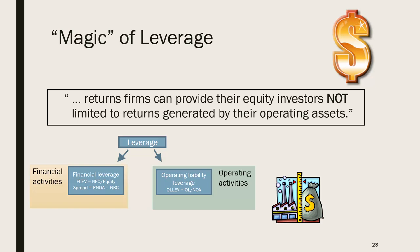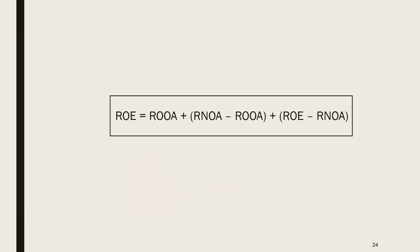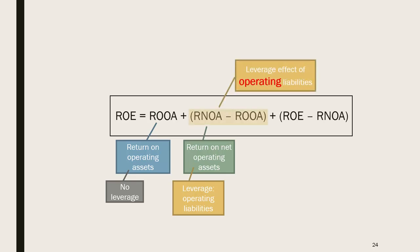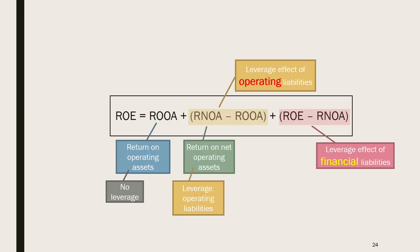The impact of leverage on returns to equity investors can be substantial, as set out in the following equation. ROOA is the return on a firm's operating assets with no leverage. RNOA is the return on net operating assets including the leverage effect of its operating liabilities. The difference between RNOA and ROOA identifies the leverage effect of operating liabilities. The difference between return on equity and return on net operating assets is the leverage effect of its financial liabilities.